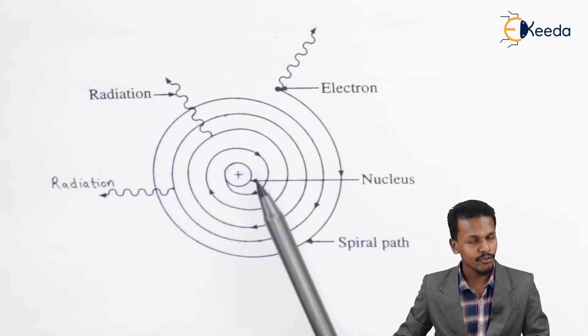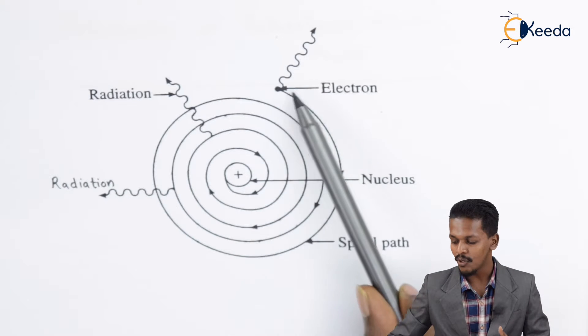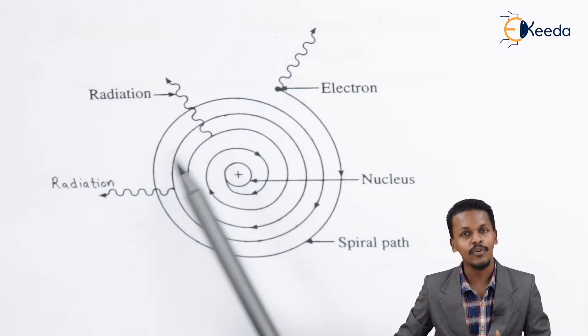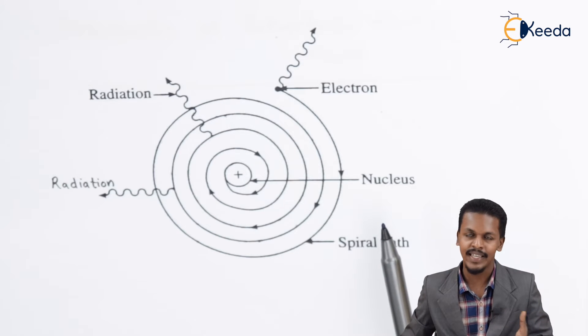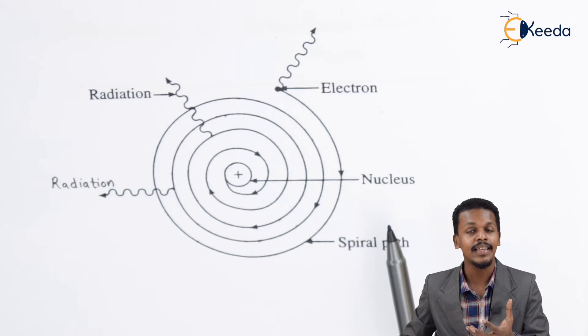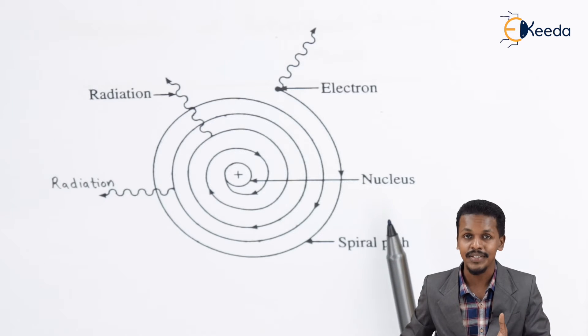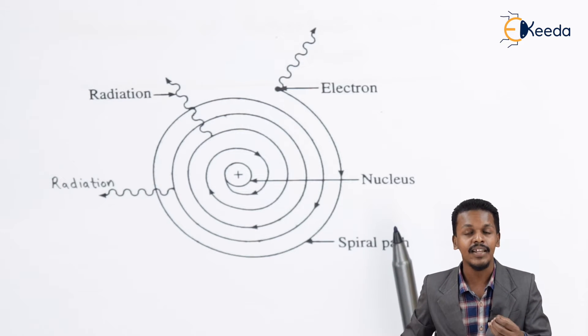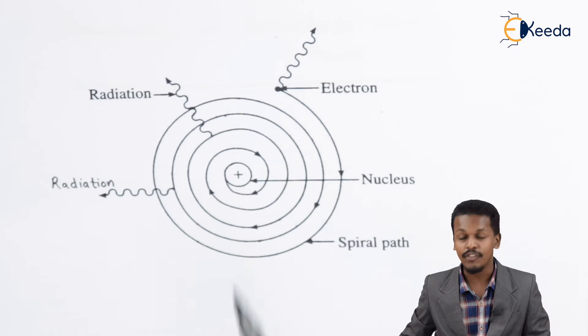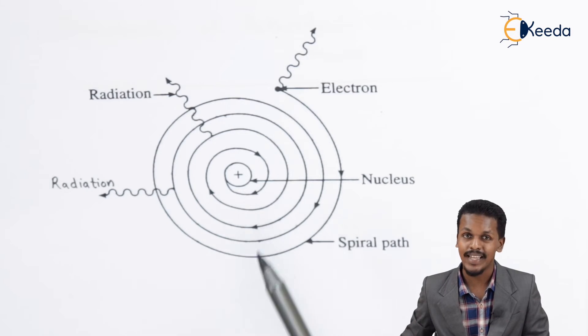According to Rutherford, since electrons are revolving around the nucleus in a continuous pattern, they will radiate energy in every moment, meaning the emission of radiation is continuous. But in actual practice, we know from atomic spectra that the radiations form a discontinuous spectra, and that was the drawback of Rutherford's atomic model.